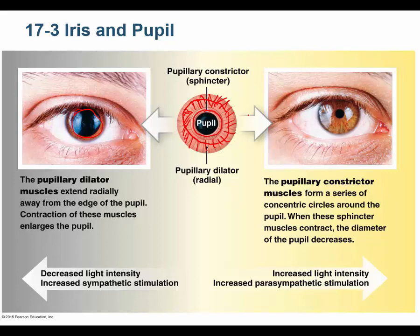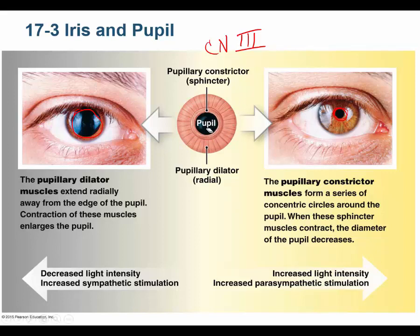The oculomotor nerve — cranial nerve number three — innervates the iris. The sympathetic nervous system also hits the iris, specifically the pupillary dilator muscles. Think about running from a saber-toothed tiger: you want a large pupil to let in a lot of light so you can see the predator from a long distance. The parasympathetic nervous system hits the pupillary sphincter muscle.